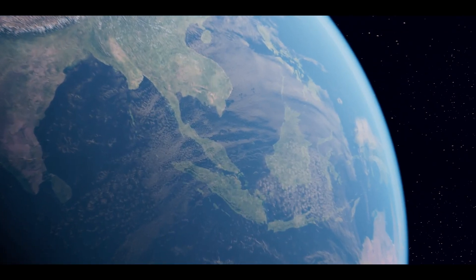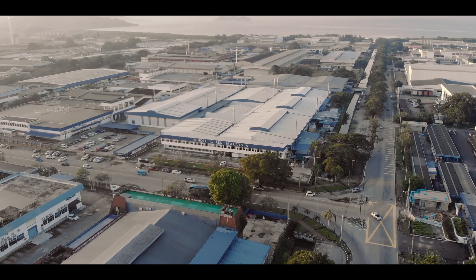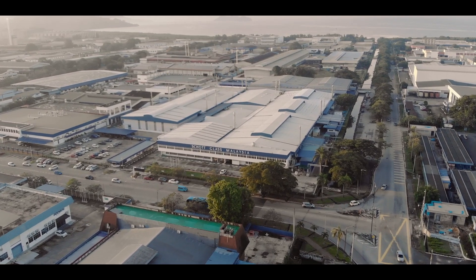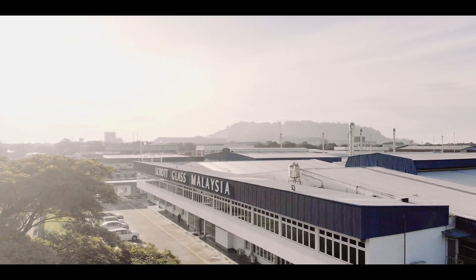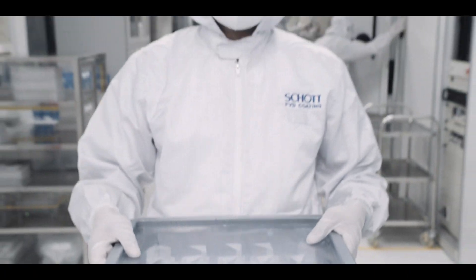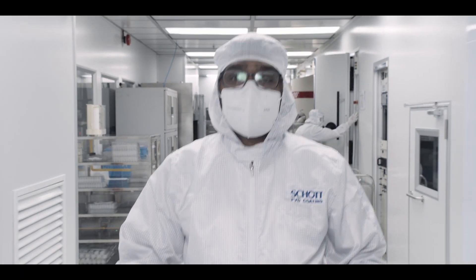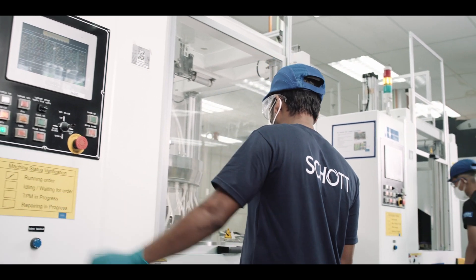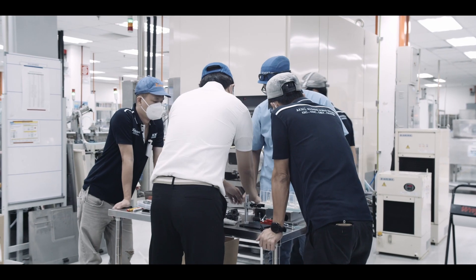Another key manufacturing partner for Lumus is SHOT, headquartered in Germany, with facilities in Switzerland and Malaysia. Lumus entered a strategic partnership with SHOT in 2019 and has built an impressive line in Malaysia focused on producing Lumus 2D reflective waveguides.